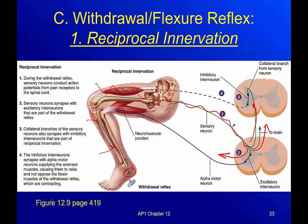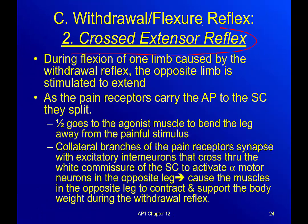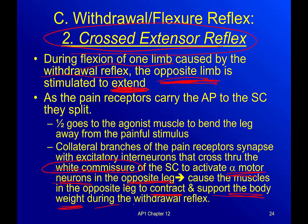Now remember, this is one leg — my other leg still has to catch me. So, the crossed extensor: I need to go across my body and get my opposite leg to extend to catch me. During flexion of one limb — when I'm bending that leg away from the nail caused by the withdrawal reflex — the opposite limb has to be stimulated to extend. Half goes to the agonist muscle to bend the leg away from the painful stimulus. Then the collateral branches of those pain receptors go across my spinal cord, across the white commissure, to activate an alpha motor neuron in the opposite leg. It causes the muscles to contract and support the body weight during the withdrawal.